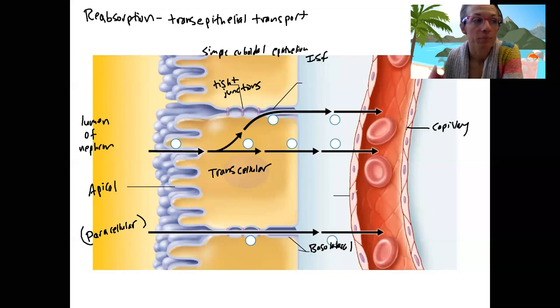Here's our capillary endothelium. And we are going to need to get things, so water, solutes, across two, three cell membranes. So here's transport across the apical membrane.